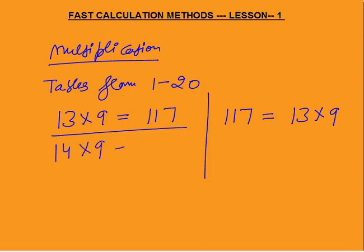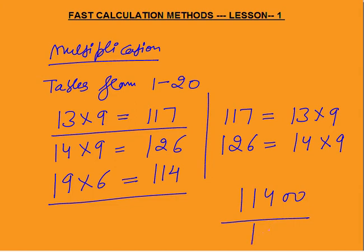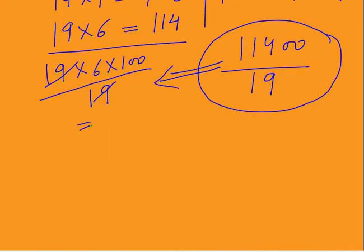14 times 9 is 126, and whenever 126 appears it equals 14 times 9. Similarly, 19 times 6 is 114 — and you must know that whenever 114 appears, it is 19 times 6. This matters in exams. For example, 11400 divided by 19: if you know 114 is 19 times 6, you write it as 19 times 6 times 100 divided by 19, and the answer is straight away 600.